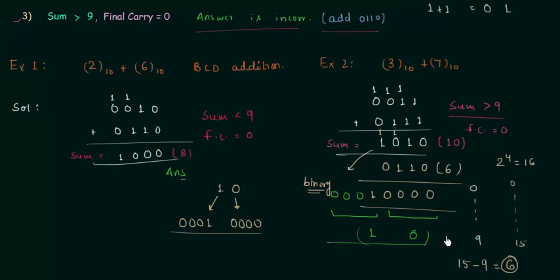Now you know why we add 6 whenever we have sum greater than 9 or whenever we have carry equal to 1. Now we will move to example number 3.